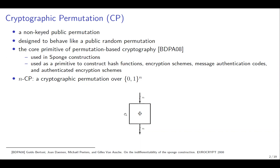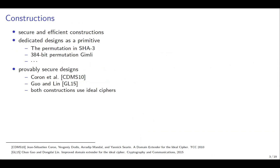An NCP is just a permutation with N-bit input and N-bit output. We want secure and efficient constructions, and in practice we have many proposals of dedicated designs as a primitive. We have the permutation of SHA-3, there is a 384-bit permutation Gimli, and there are many other proposals.